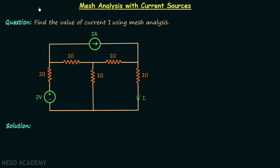We have completed the basics of mesh analysis and now we are going to perform mesh analysis with current sources present in the network. With current sources present, there are two cases. In case number one, the current source is present in a branch of a mesh which is not shared by other meshes. For example, in this network a current source providing 2A is present in a branch belonging to only one mesh.